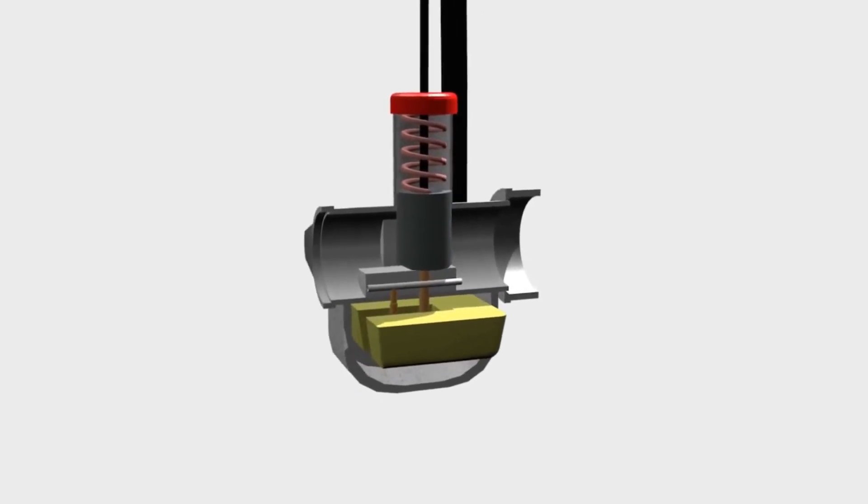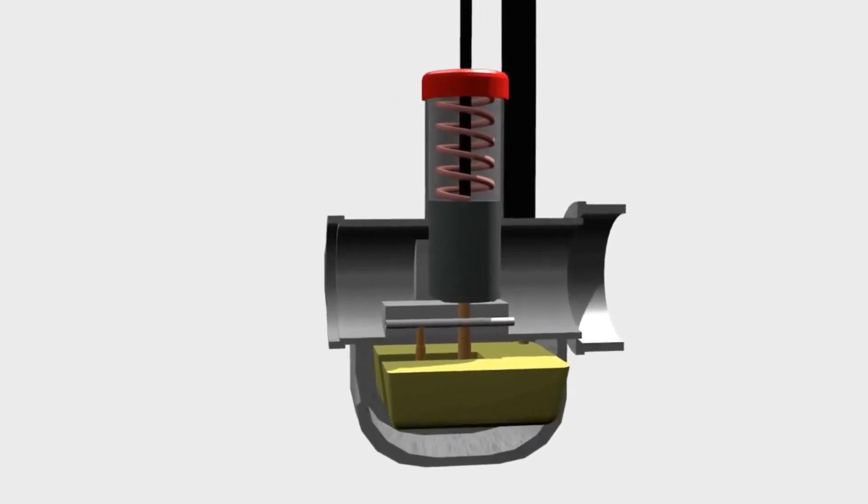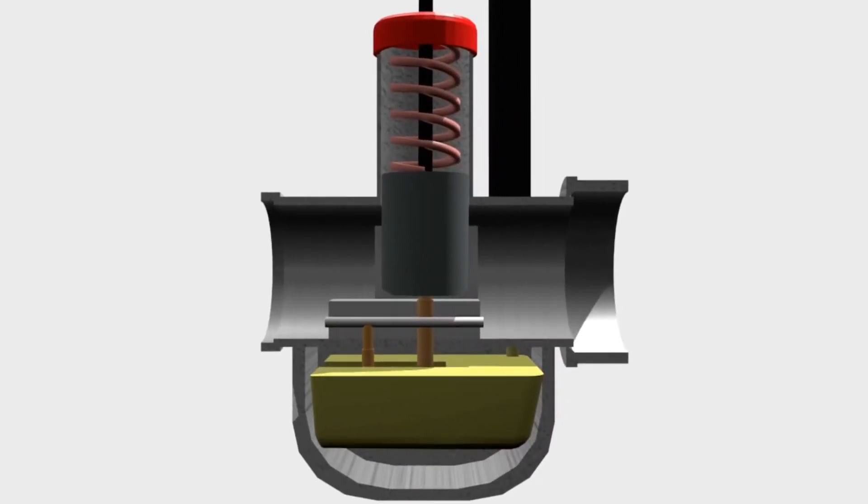In this type, controlling RPM is done by adjusting the width of the Venturi. So before we go on, we should know some important parts of this carburetor. First, the piston. It functions to regulate the width of the Venturi.